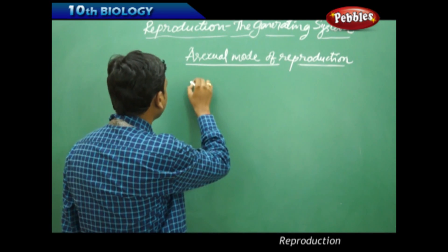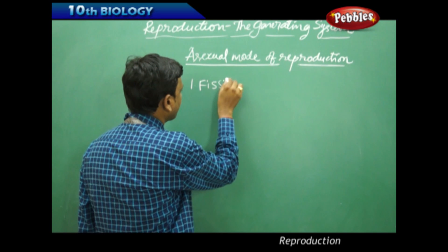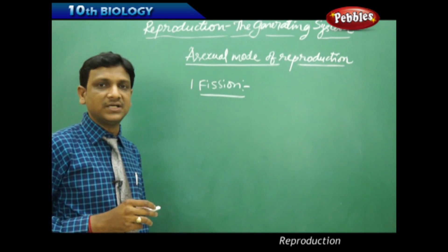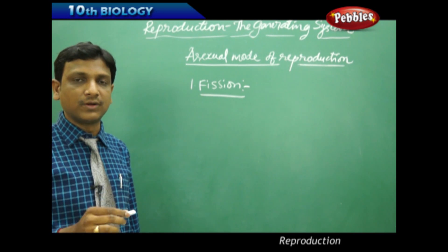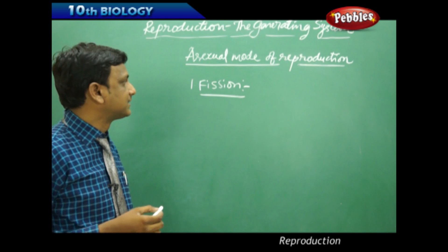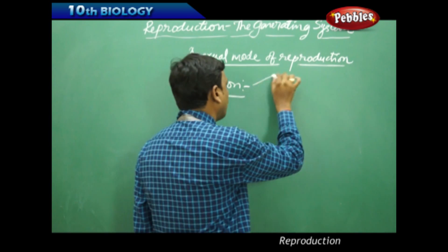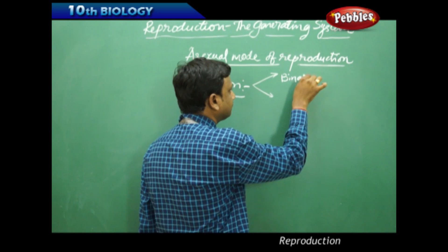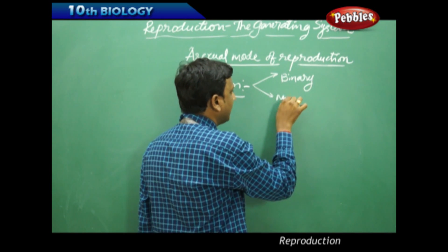The first one we see is fission. Fission means splitting of an organism into two or many young ones. Fission is again two types: binary fission and multiple fission.